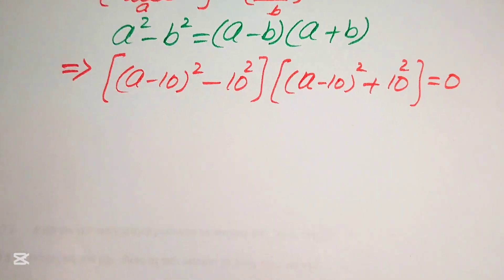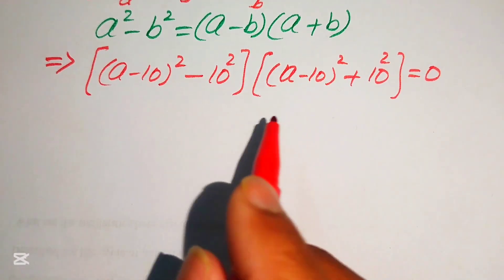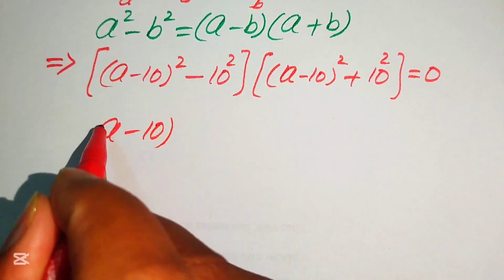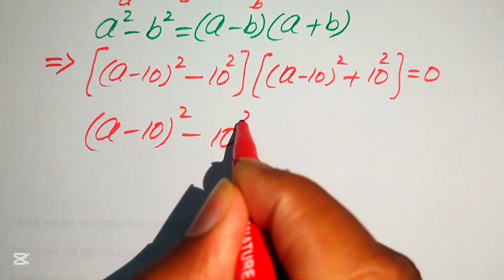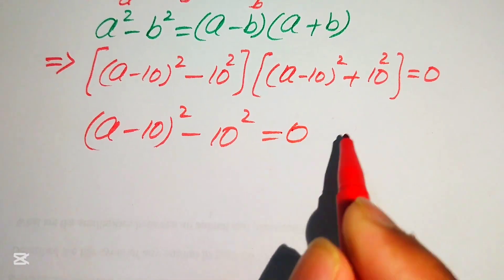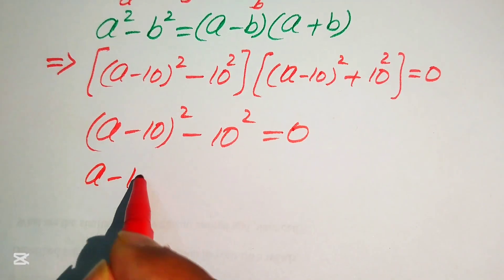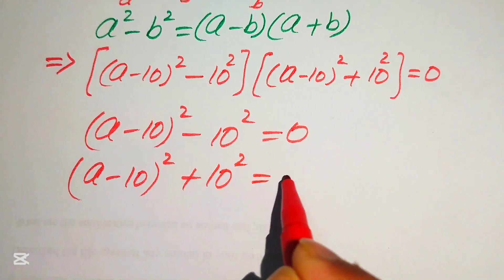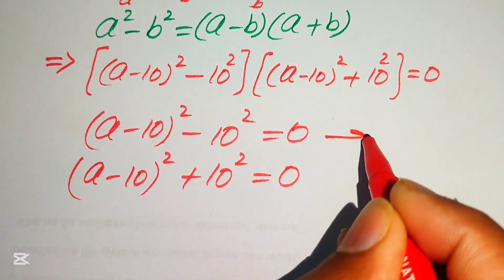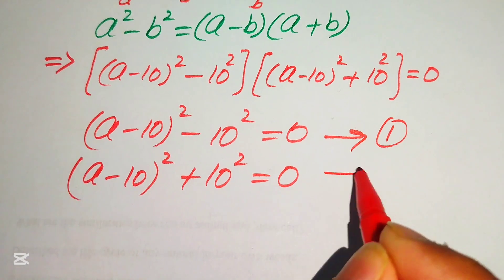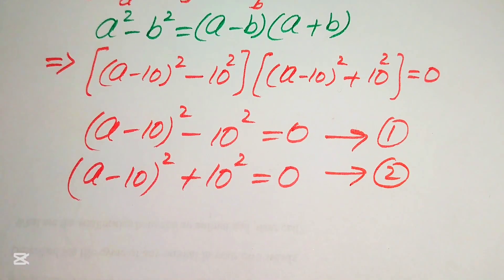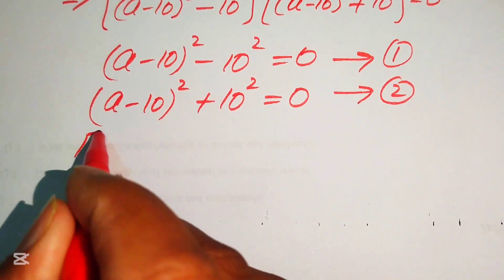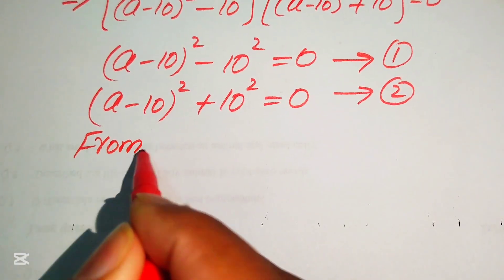In the next step we convert this equation into two cases. Case 1: (a minus 10) squared minus 10 squared equals 0 — we call this equation number 1. Case 2: (a minus 10) squared plus 10 squared equals 0 — we call this equation number 2. We will solve these two equations one by one.